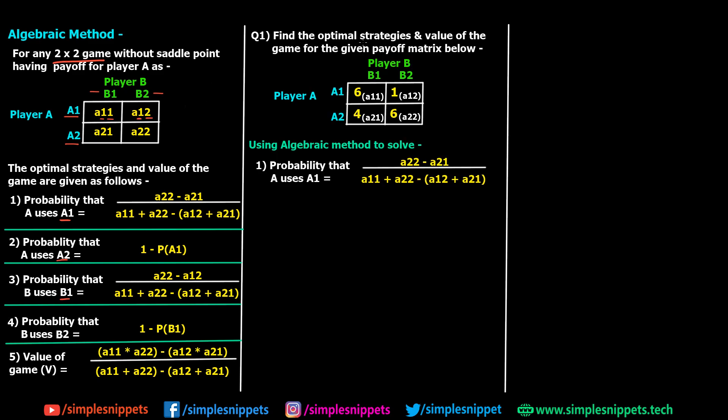We've been given find the optimum strategies and values of the game for the given payoff matrix. Here I've taken a 2 cross 2 matrix directly. What happens is usually in question we have a larger matrix which might be 3 cross 3, 3 cross 4, 4 cross 4, anything. Then you'll be using some dominance method or some other method to reduce that matrix. We've seen dominance method in the previous video. Then you come to a 2 cross 2 matrix, and after which we cannot probably apply the dominance method onto it.